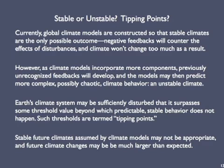In other words, an unstable climate. Earth's climate system may become so disturbed or disrupted that it crosses some threshold value that the models currently don't recognize, and beyond which predictable, stable behavior may not be possible. Such thresholds are referred to as tipping points. The stable future climates assumed by current climate models may not be appropriate, and future climate changes may be much larger than those usually anticipated. That's the end of episode 21.